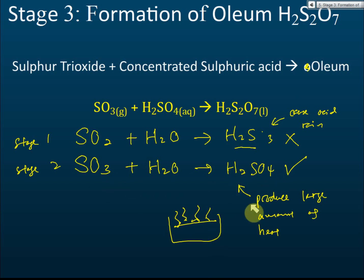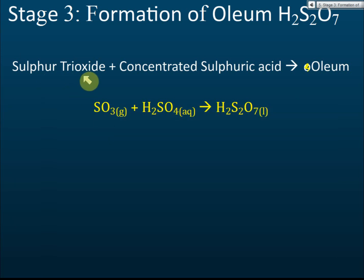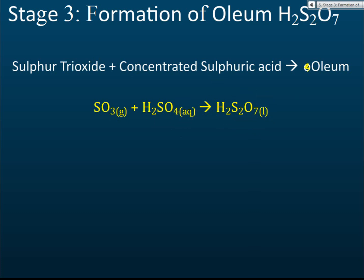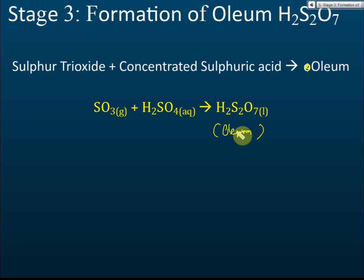But in industry, we produce large amounts of sulfuric acid, so we cannot do this — it would boil the sulfuric acid and produce dangerous vapors that are very hard to control. Therefore, what we do instead is dissolve sulfur trioxide into concentrated sulfuric acid. Sulfur trioxide plus concentrated sulfuric acid produces H₂S₂O₇, which is called oleum. This reaction produces only a small amount of heat.